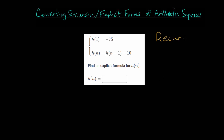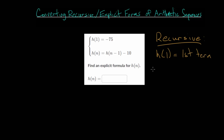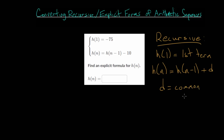For the recursive formula, we always start with the first term — h of 1 — that's just our first term, and we're going to be given that. Then we're going to be given the pattern. To find the nth term, we look at the term before that, h of n minus 1, and add the common difference d. That's our recursive formula.